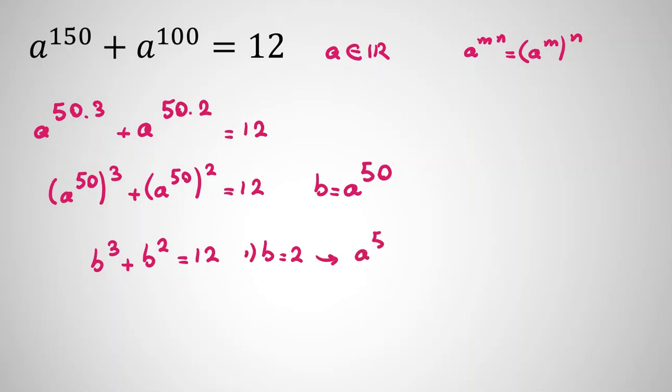b equals a to the 50, so a to the 50 equals 2. Since a is a real number, a equals plus or minus the 50th root of 2.